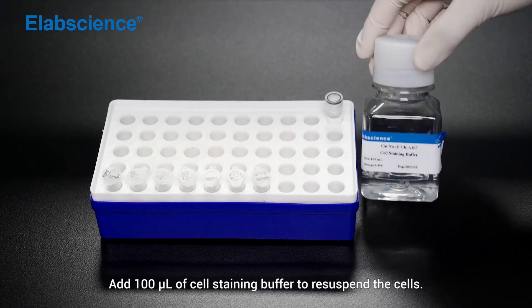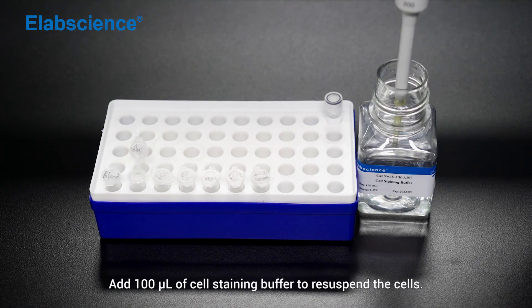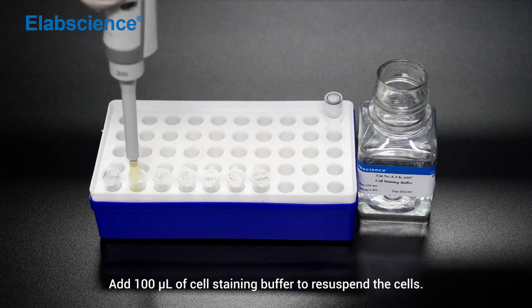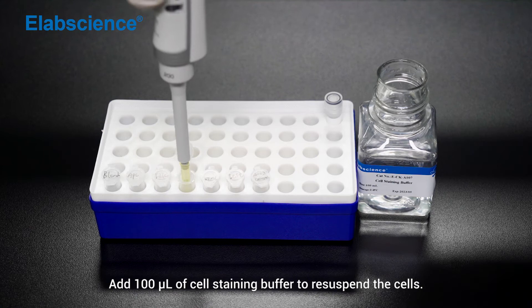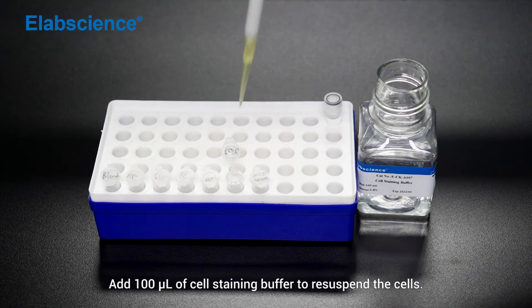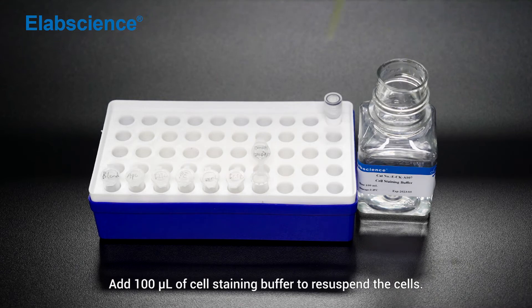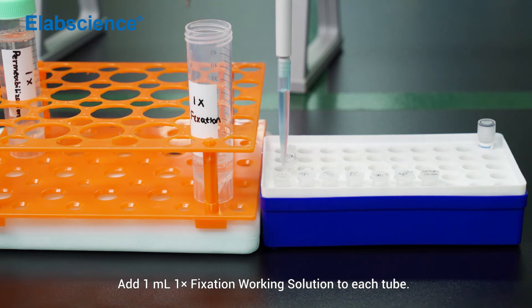Add 100 microliters of cell staining buffer to re-suspend the cells, add 1 ml of one-time fixation working solution to each tube.